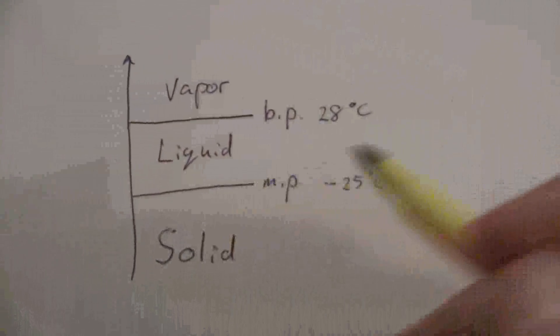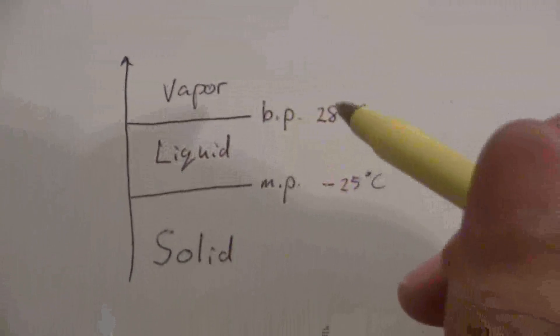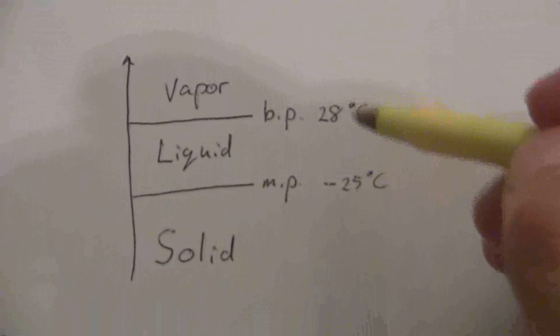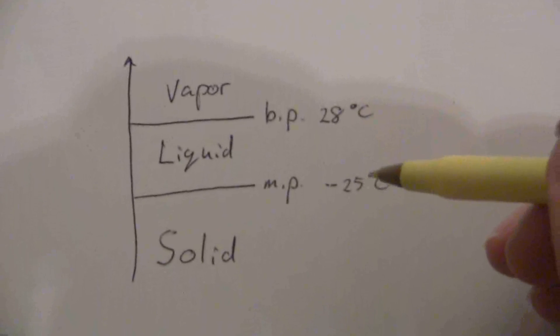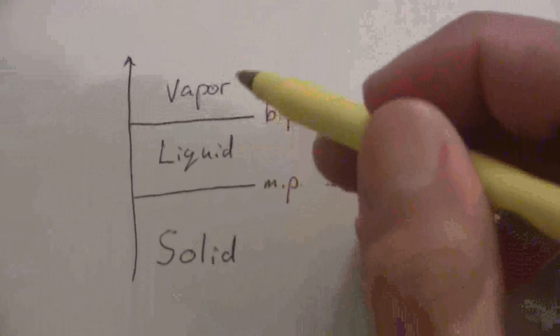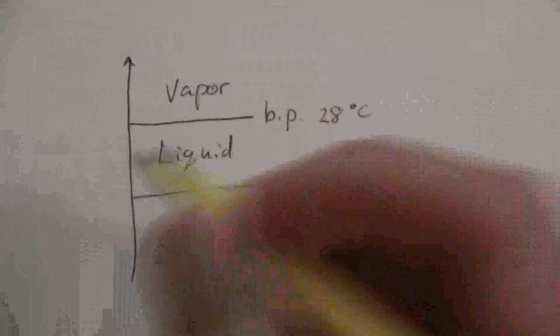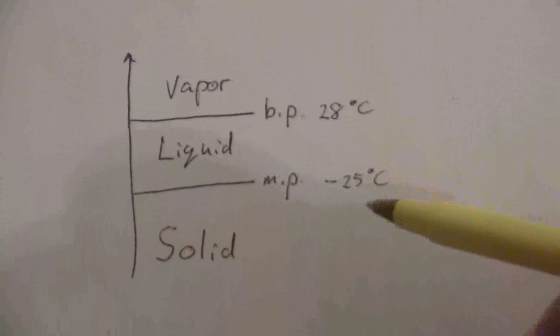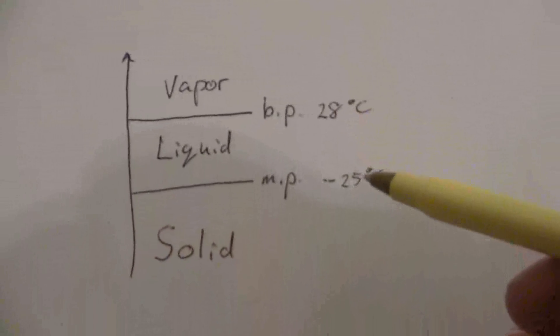So if we have the boiling point and the melting point for a substance, we can tell whatever state it's going to be at any given temperature. All we have to do is compare that temperature with the boiling and the melting points.